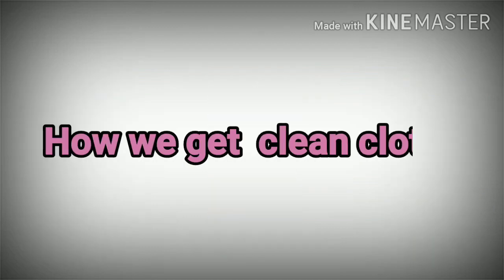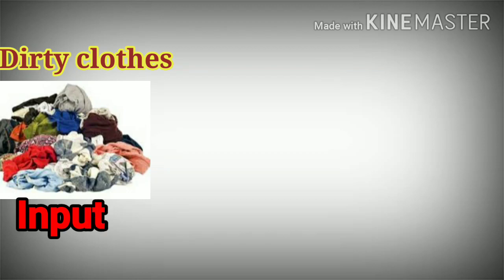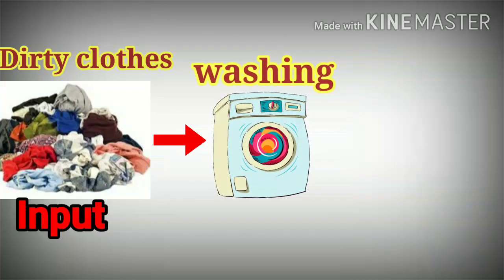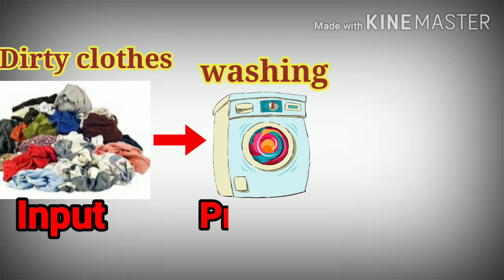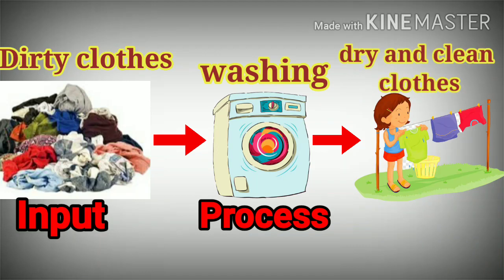Friends, do you know how we get clean clothes? First we take the dirty cloth — the dirty cloth is the input. Then we put the dirty cloth into the washing machine. The washing is the process. After washing, we get clean and dry cloth — that is the output.